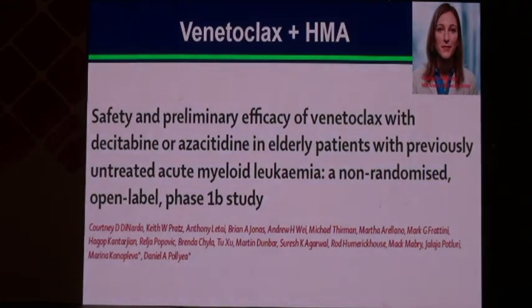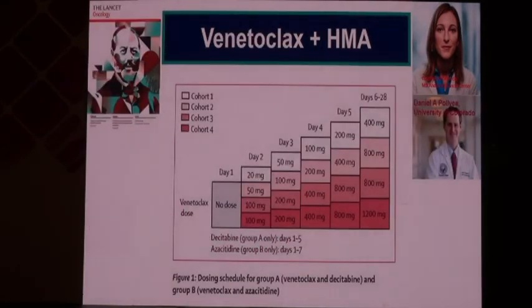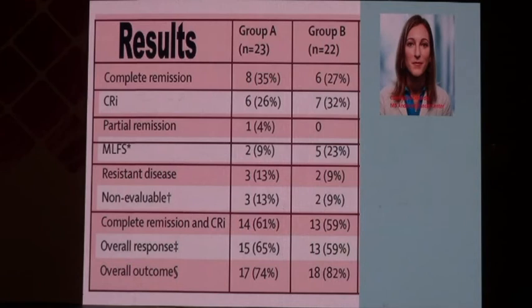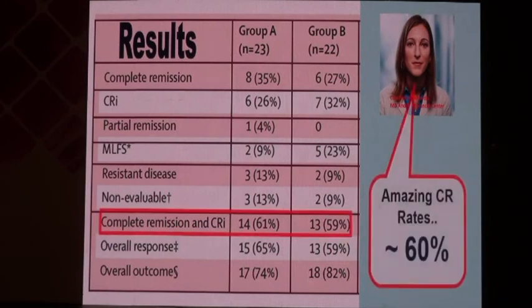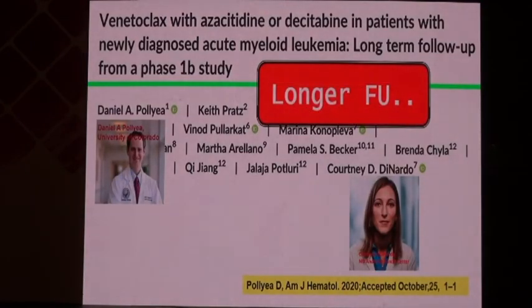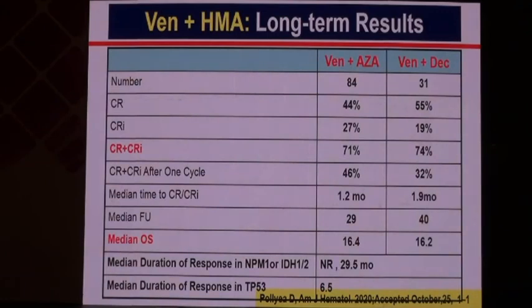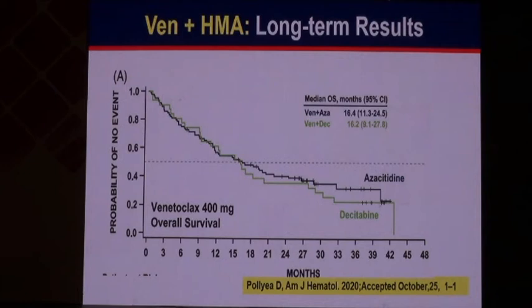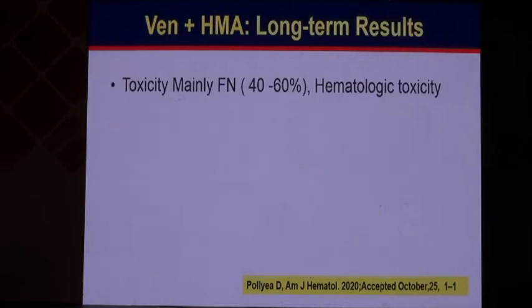An important study by Courtney DiNardo at MD Anderson showed that in phase 1, escalating venetoclax combined with hypomethylating agents produced a CR rate rising to almost 60% — for the first time in history achieving 60% with a simple medication in elderly acute myeloid leukemia. With longer follow-up, CRs in most patients were sustainable, with survival curves rising to 30-40% even at three to four year follow-up. This is a real advance in elderly AML therapy.